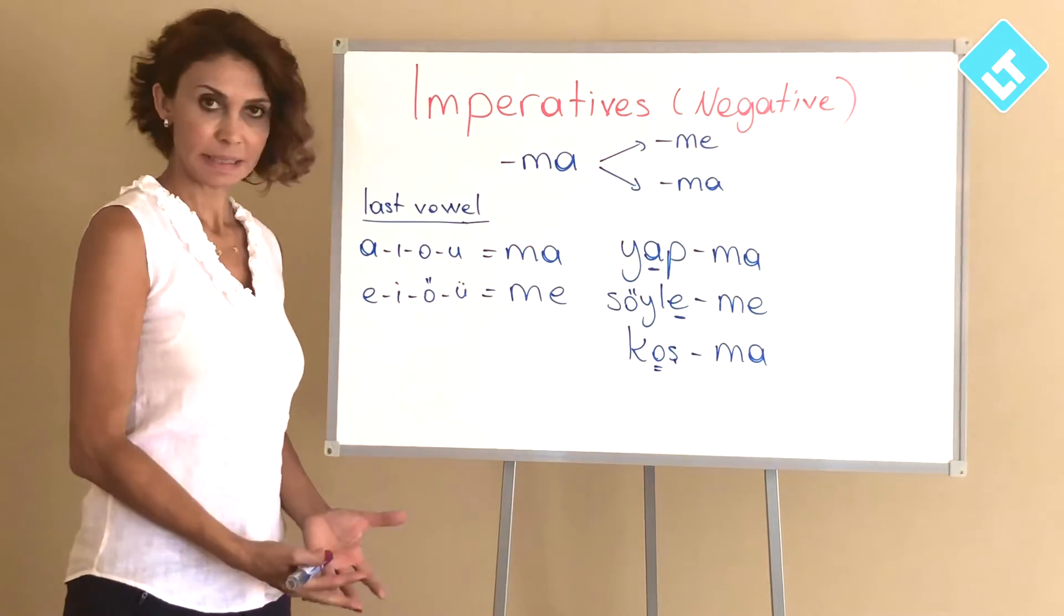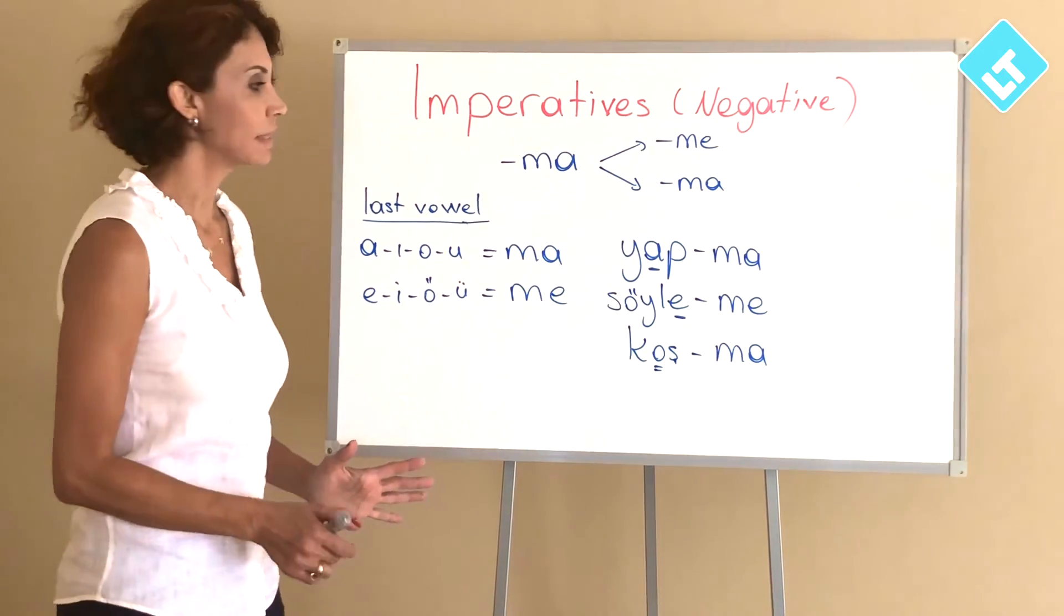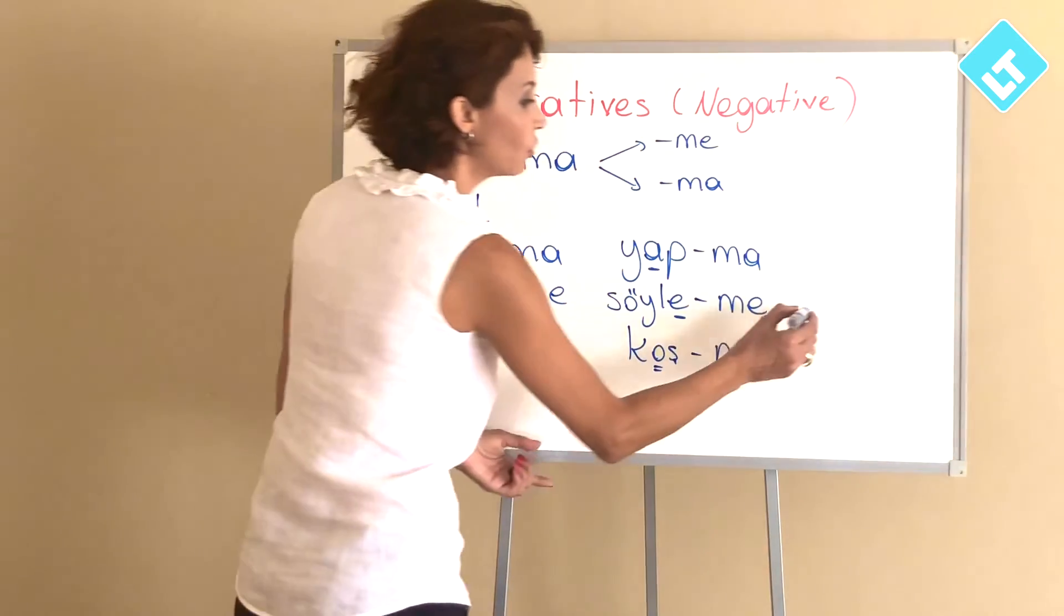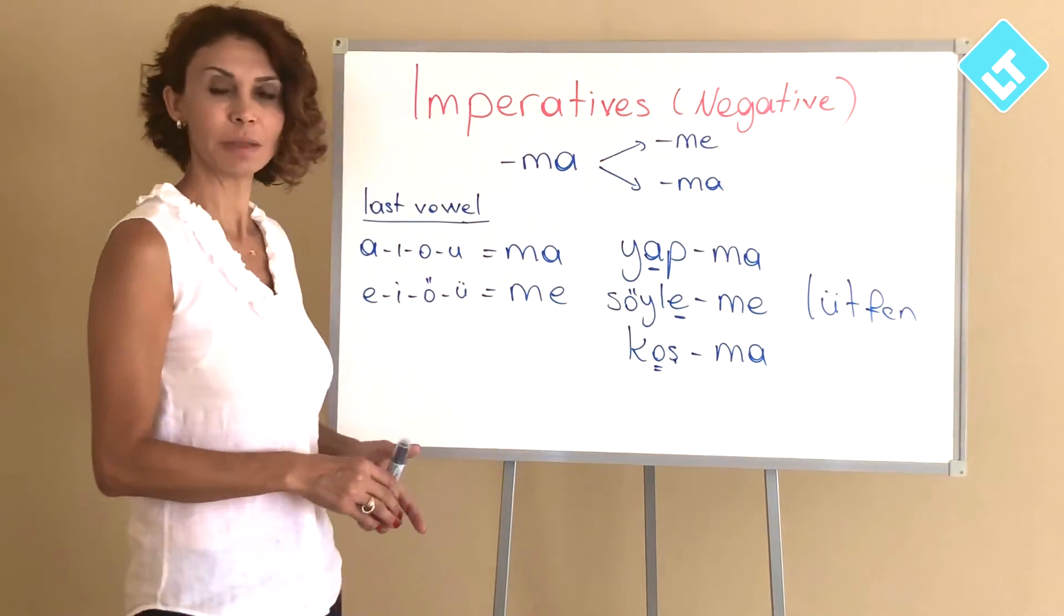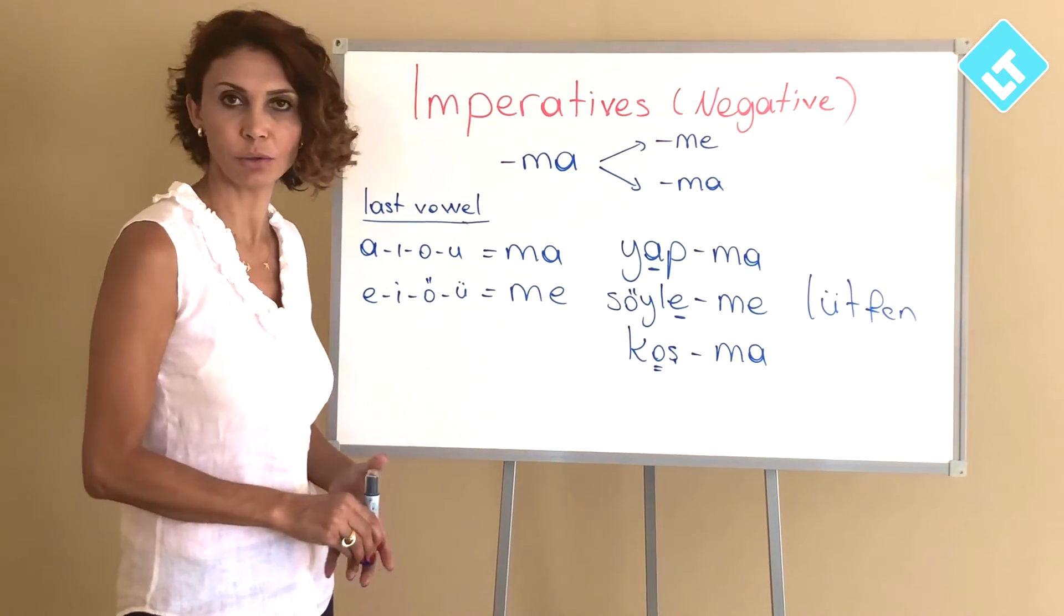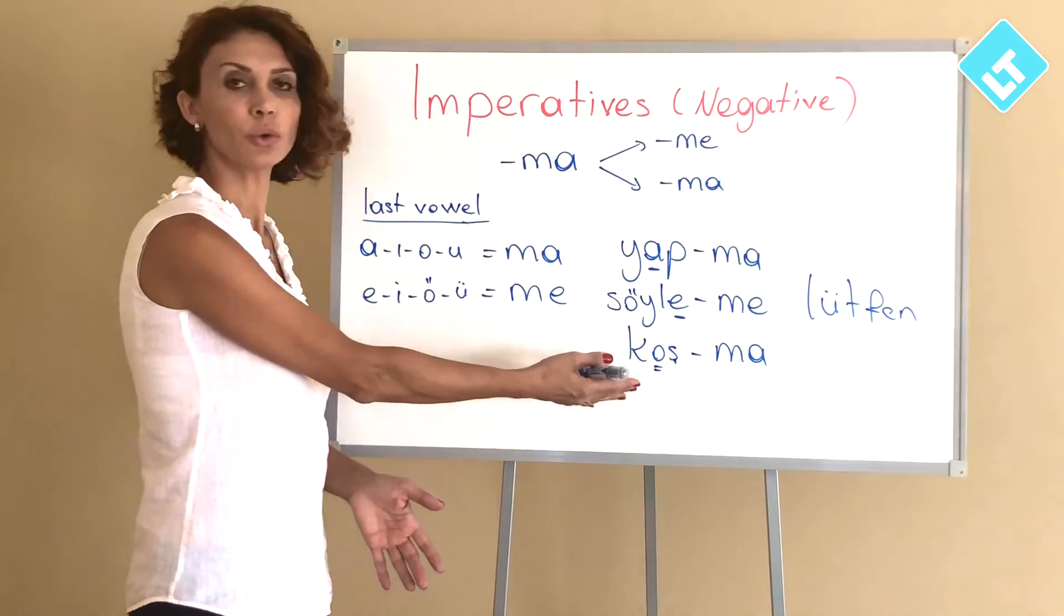You can still use please with the negatives when you say don't do that please: yapma lütfen. Don't go. Please don't go: gitme lütfen or lütfen gitme. Lütfen koşma.